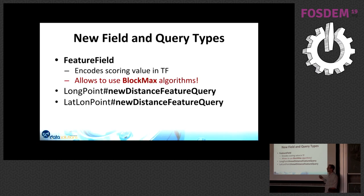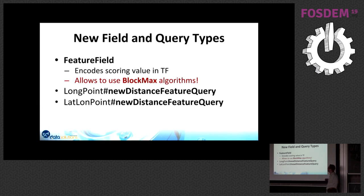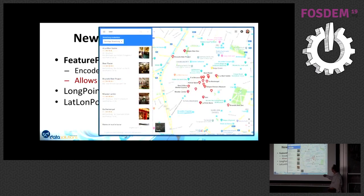If you've done this using a doc values field in Solr, it won't work with block-max. The idea with the feature field is to use a hard-coded term frequency as a value — for example, if the page rank is high, you set the term frequency to 200 in the term dictionary — then you can use exactly the same algorithm to jump over uninteresting documents. These fields have feature queries, and for LatLonPoint there's a distance feature query to score based on distance from a center location.